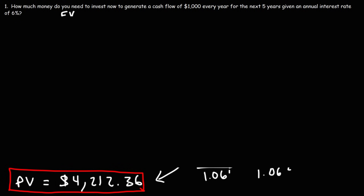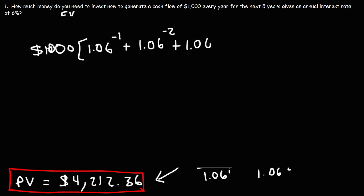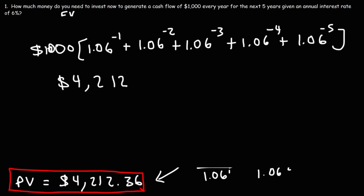If you don't want to draw the picture, you can also calculate it this equivalent way: take the cash flow of $1,000 and multiply it by (1.06 raised to the minus 1) plus (1.06 raised to the minus 2) plus (1.06 raised to the minus 3), and so on all the way to the fifth term. This will give you the same answer: $4,212.36.